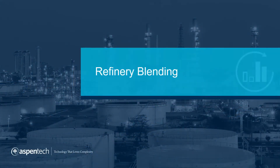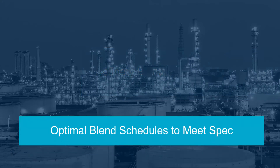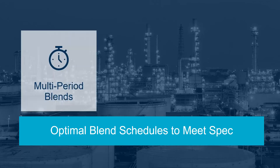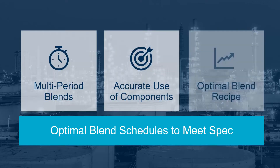Optimize blend schedules to maximize profit and consistently meet product demand to specification. Refinery blending software enables refiners to produce optimal blend recipes that meet product specification by scheduling multi-period blends that use the optimal mix of components. By effectively utilizing inventory, blend schedulers are enabled to discover additional profit opportunities, such as selling excess valuable components to increase profit margins.